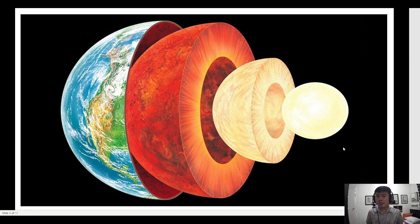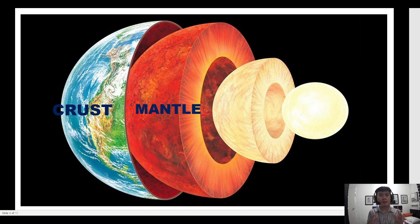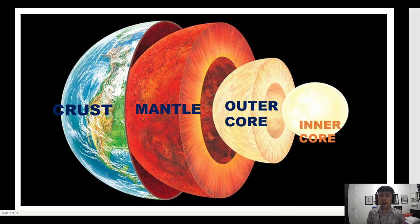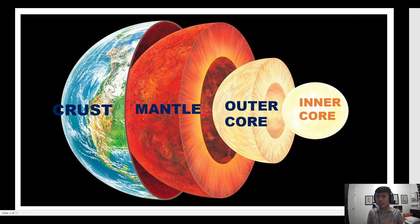Let's start our discussion by recalling the different layers of the earth. First we have the crust, which is the outermost and the thinnest layer. Beneath the crust we have the mantle — it is the largest layer of the earth and is denser compared to the crust. Then we have the core, which is divided into two: the outer core and the inner core. The core is mainly made of metals like iron and nickel. The outer core is molten while the inner core is solid.